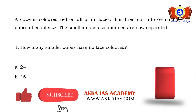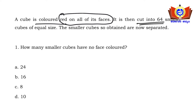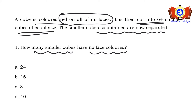A cube is colored red on all of its faces — only one color has been used. It is then cut into 64 smaller cubes of equal size. The smaller cubes obtained are now separated. The question is: how many smaller cubes have no face colored?